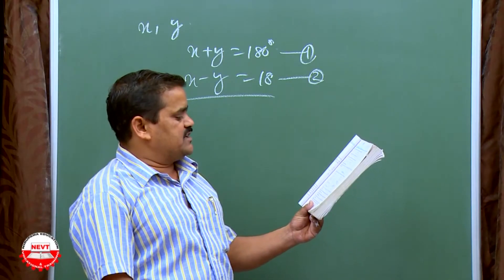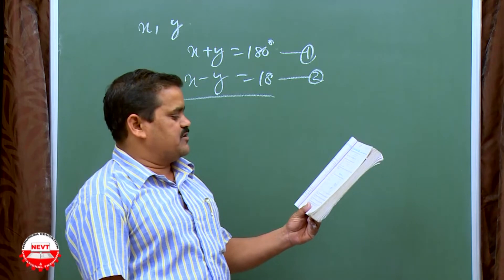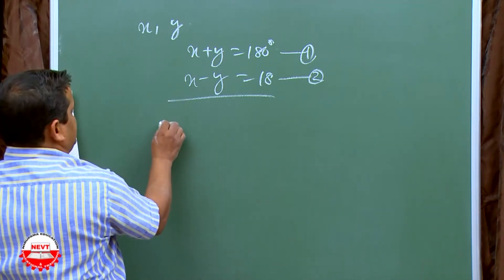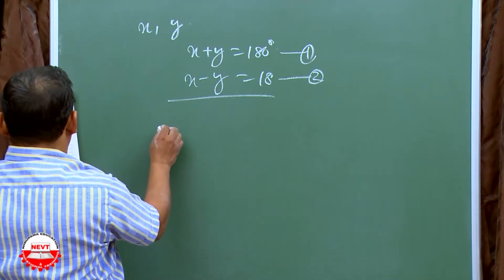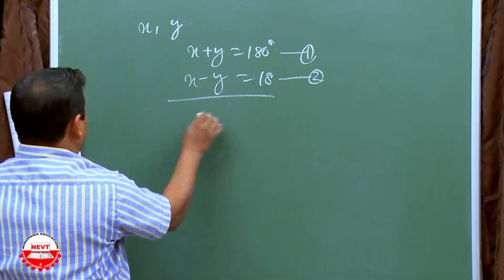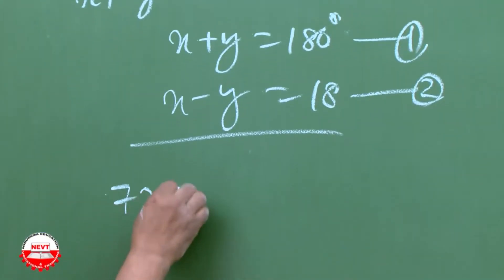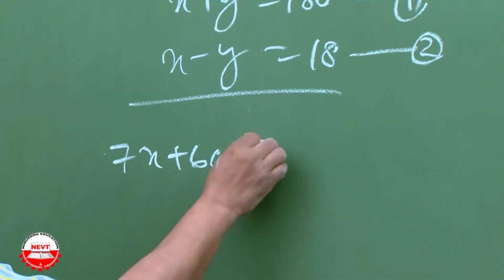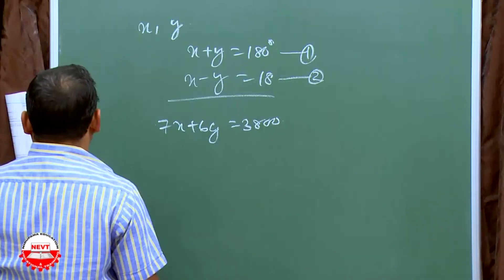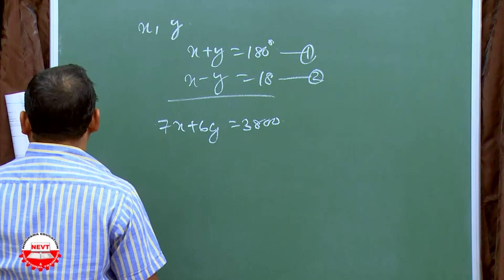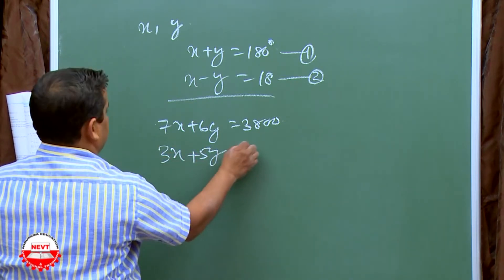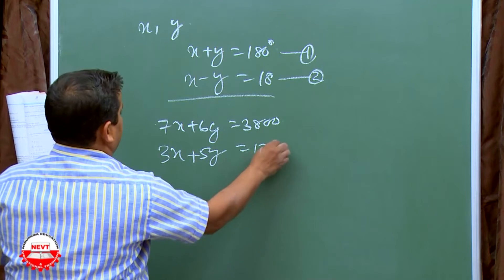The third part: a cricket coach buys 7 bats and 6 balls for rupees 3800. Let the cost of 1 bat be X and 1 ball be Y. So 7X plus 6Y is equal to 3800 (equation 1). Later, buying 3 bats and 5 balls costs rupees 1750, so 3X plus 5Y is equal to 1750 (equation 2).